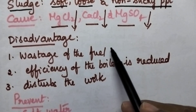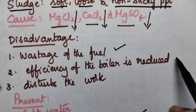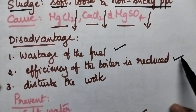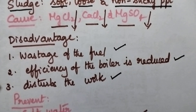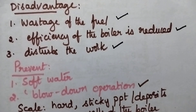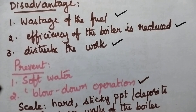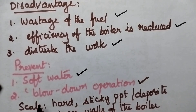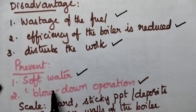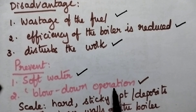Coming to the disadvantages of sludge: it causes wastage of fuel, the efficiency of the boiler will be reduced, and it also disturbs the work. Sludge formation can be avoided by using soft water instead of hard water, or the sludge formed in the boiler can be removed from time to time by blow-down operation.